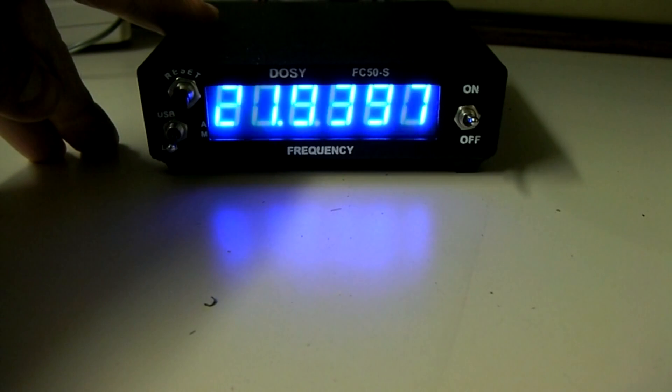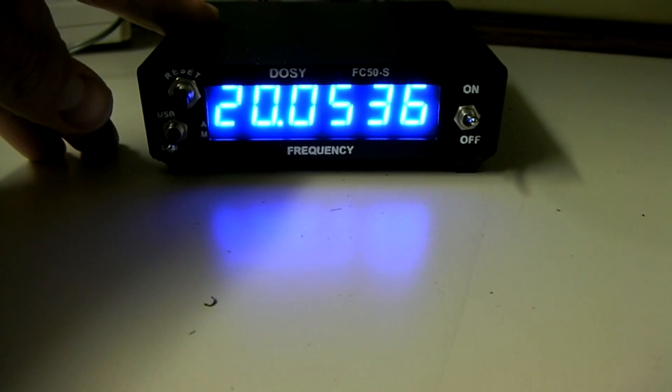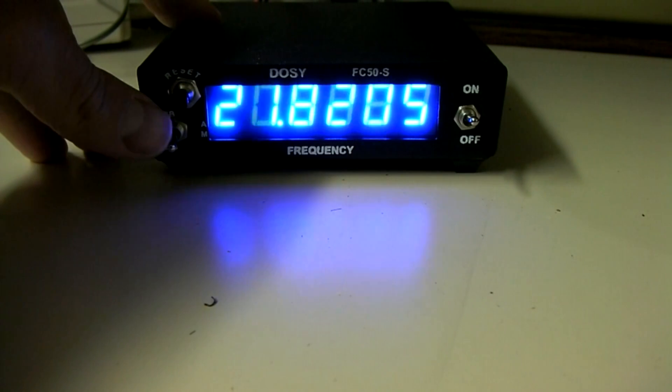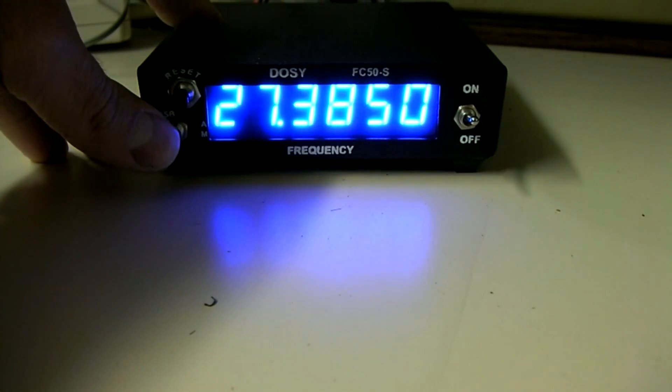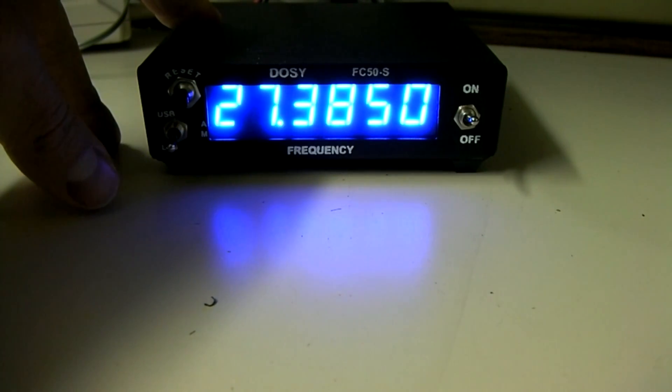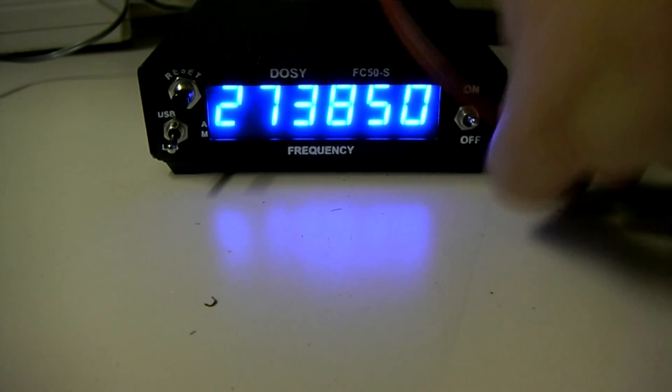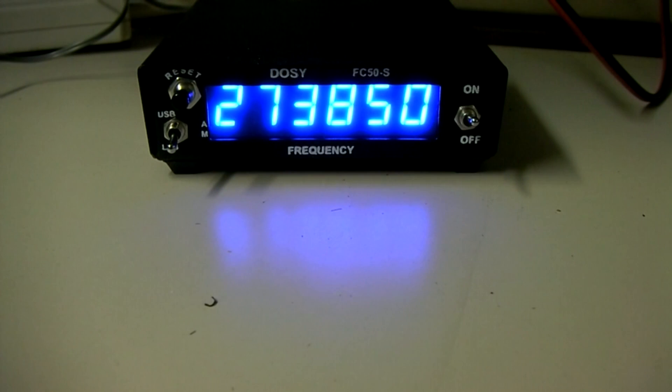So here we go. And we've keyed the radio. You see it's jumping around like it does on sideband. And now we're going to inject the tone by pushing down. And we released the tone. And I've unkeyed the radio. And it shows us that we're on 37.3850. So we're right on frequency for our transmit on single sideband. And that's how the Dozey frequency counter works for measuring single sideband signals to see if you're on frequency.